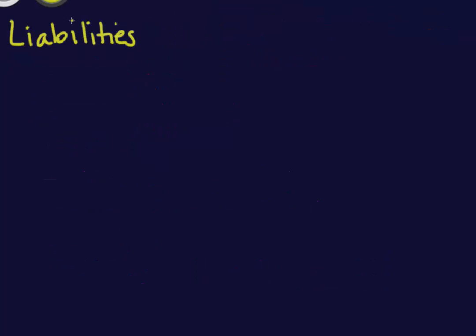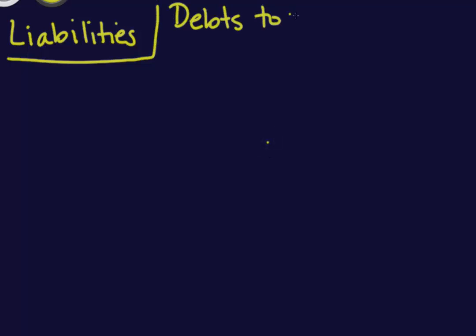Now let's talk about what liabilities are. Liabilities are debts that are payable to outsiders of the company, sometimes called creditors.